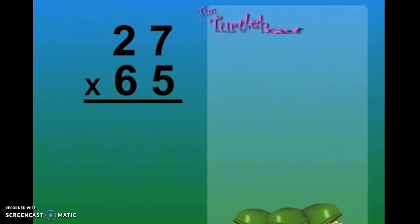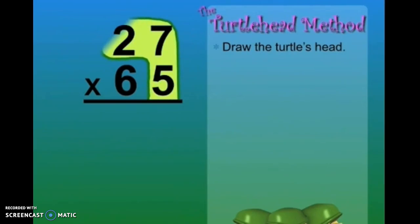Let's multiply 27 times 65. First draw the turtle's head. Multiply by the number in its neck. 5.